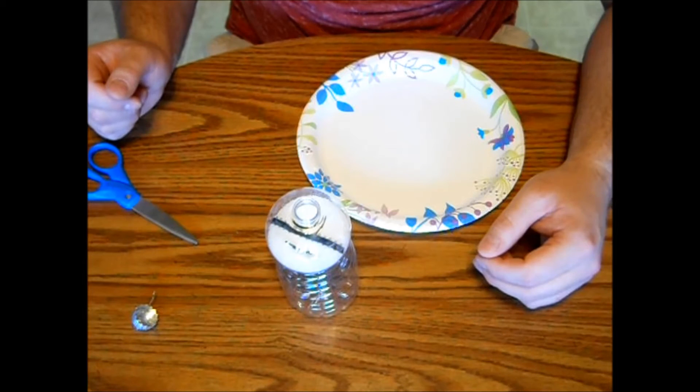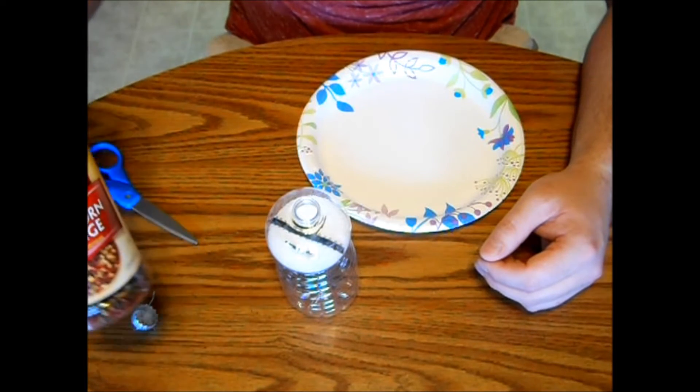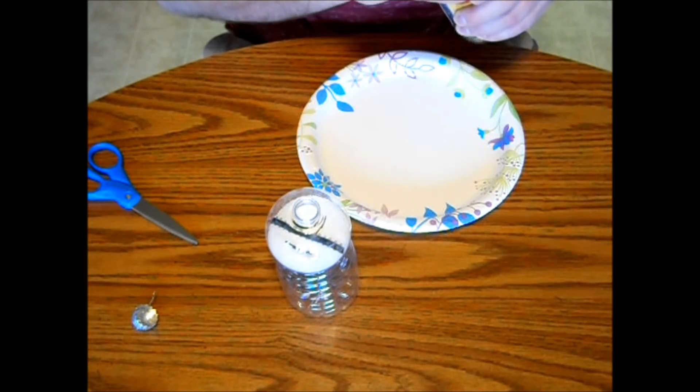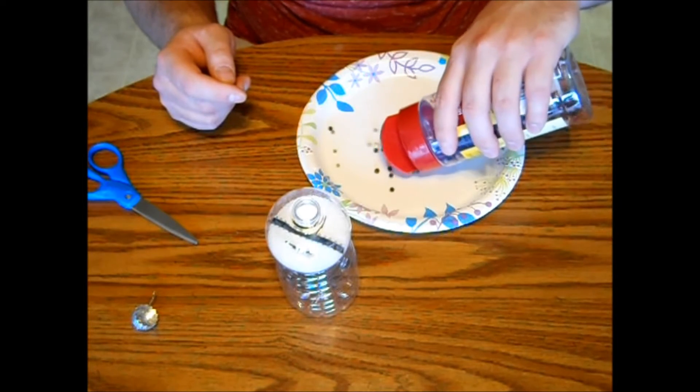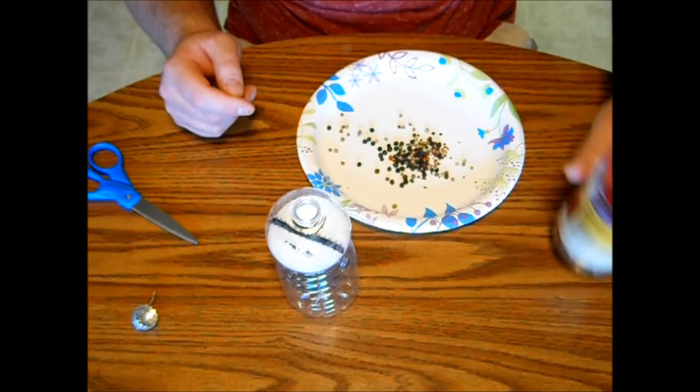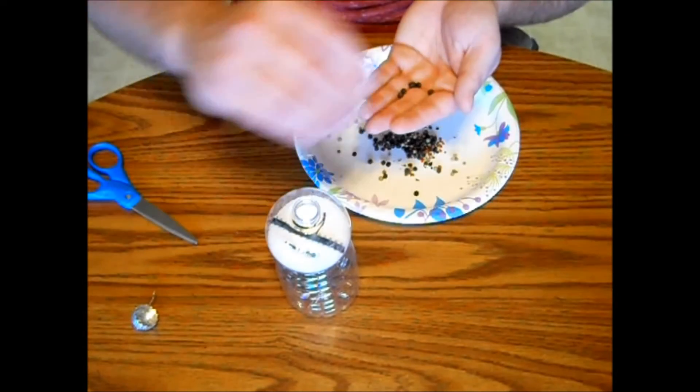Next, you want to pick out seven peppercorns. And like I said, since I have a medley here, I'm just going to dump some out and pick out the black ones. And that's going to be the coals and the eyes for our snowman. And just plop them in there.